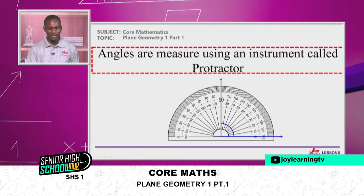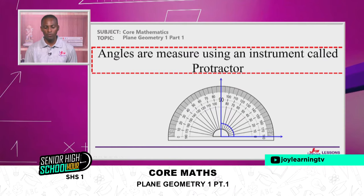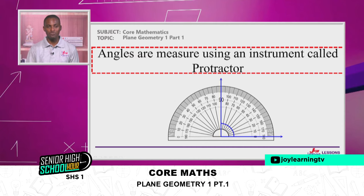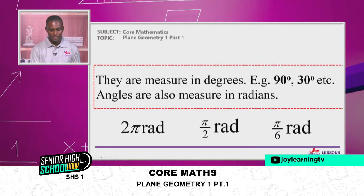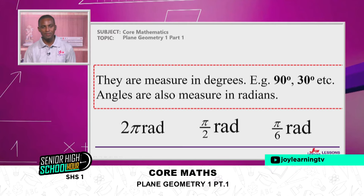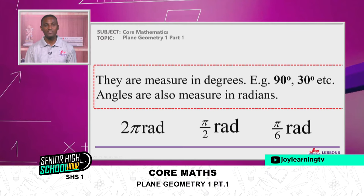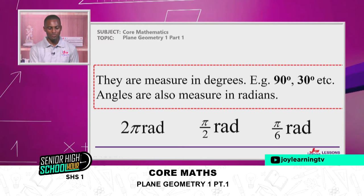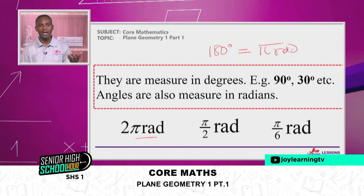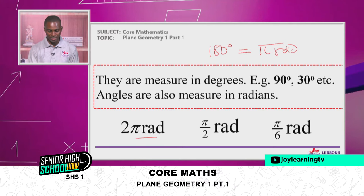How do we measure angles? Angles are measured using an instrument called a protractor — you can see it on the screen. They are measured in degrees. In some cases, we also measure angles using radians or grades. In elective mathematics, especially trigonometry, you may be asked to leave answers in radians. For example, 180 degrees equals pi radians, and 90 degrees equals pi/2 radians.